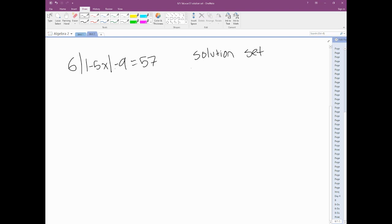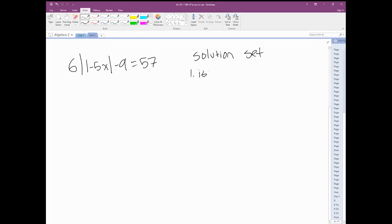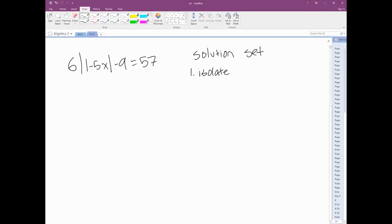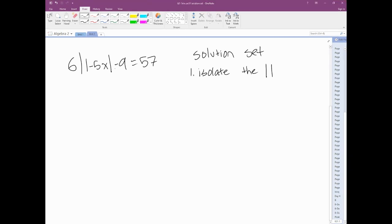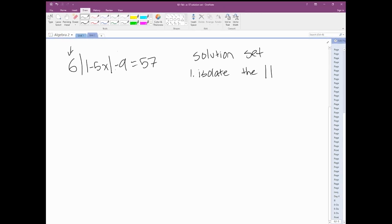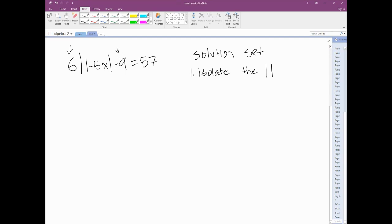The first thing we need to do is isolate the absolute value. We're going to do this by getting rid of this 6 and this negative 9 by using inverse operations.